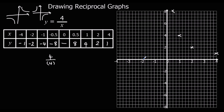Minus a half goes with minus 8. Minus 1 goes with minus 4. Minus 2 goes with minus 2. And minus 4 goes with minus 1. So here we've formed the shape — then we have to join the points up with a smooth curve. Hopefully better than mine.